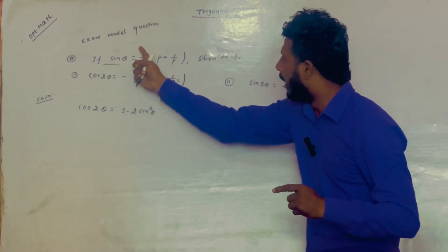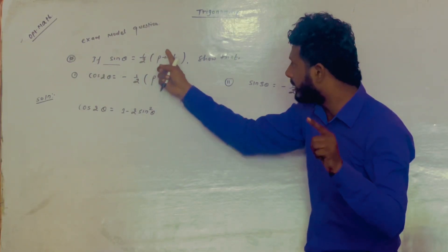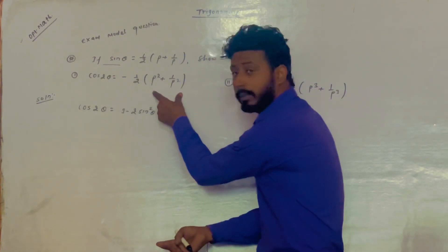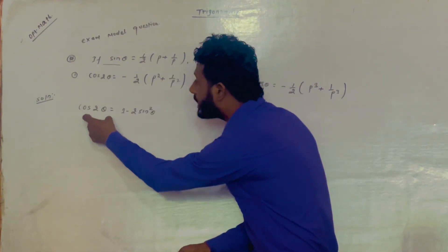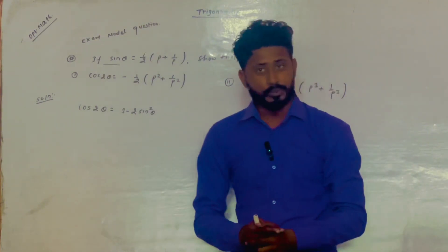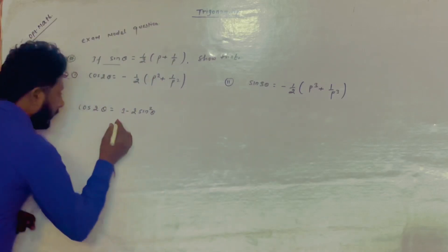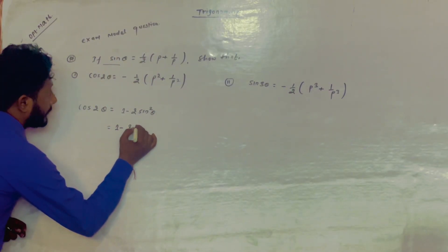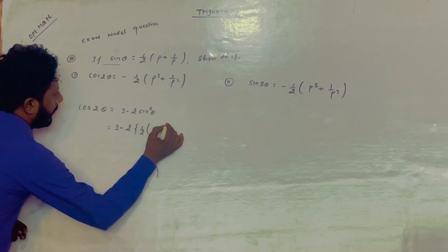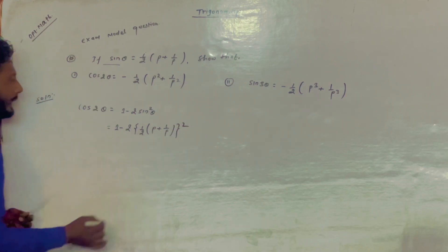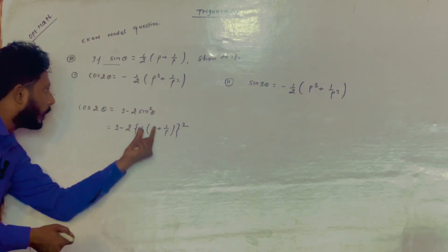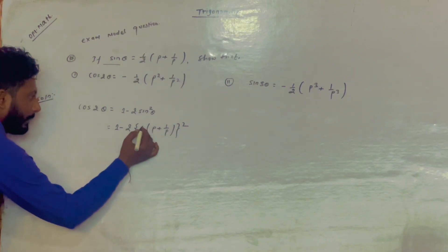Wherever sine appears, we place 1 by 2, p plus 1 by p. Because we want to prove this formula — last we need cos 2 theta equals 1 by 2, p squared plus 1 by p squared. So 1 minus 2, and sine value is 1 by 2 bracket p plus 1 by p — whole square, because sine theta equals that value squared.